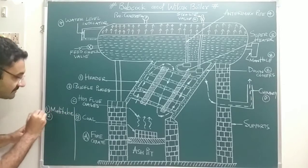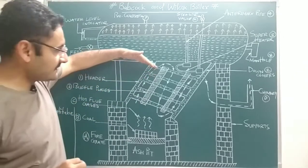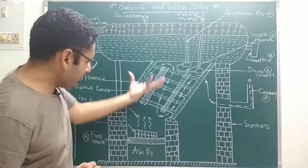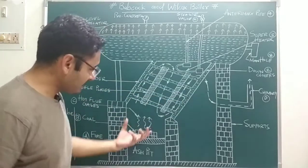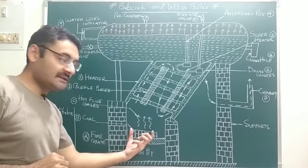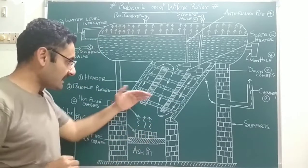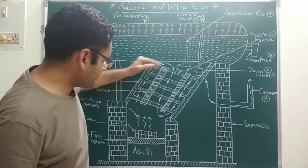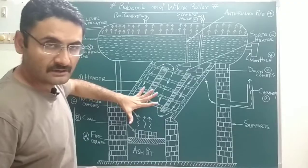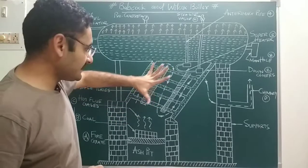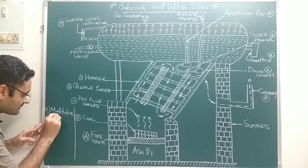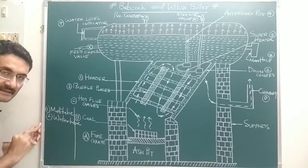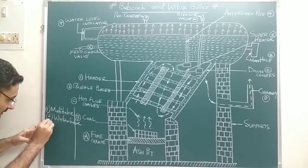The second point: as you can see, inside the tubes water is present, and the tubes are surrounded by flue gases produced by the combustion of coal. Inside the tube, water is present, and the tube is surrounded by flue gases — that is why it is known as a water tube boiler.